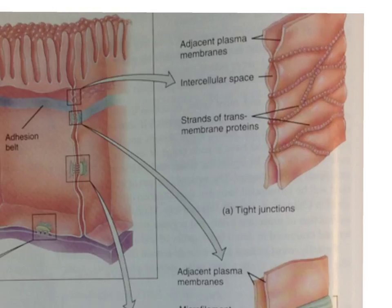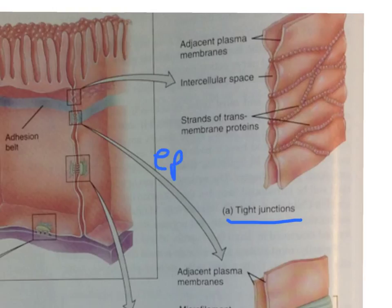The tight junctions are composed of strands of transmembrane proteins that resemble a net or a spider web. These proteins act as rivets that strongly bind together the cell membranes of adjacent cells. Tight junctions are common in the epithelial tissue of the digestive tract, as well as in the urinary bladder, where they create a tight seal between the cell membranes of adjacent cells, preventing substances from passing in between the cells.